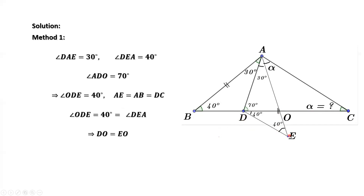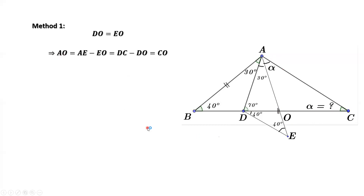DO equals OE. This side AE equals this side DC, and DO equals OE. This implies this side equals this side: AO equals OE, which means AO equals OC. This means triangle AOC is isosceles, so the two base angles are equal: this angle equals this angle.